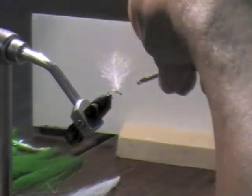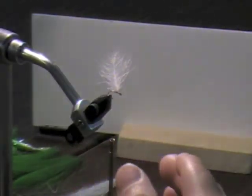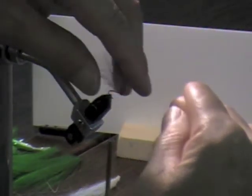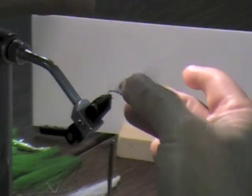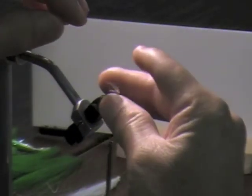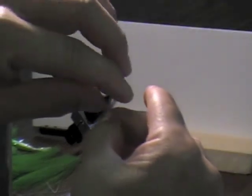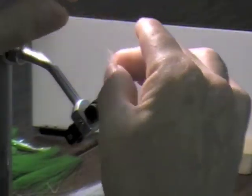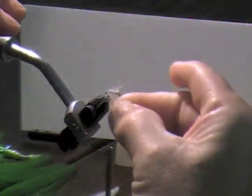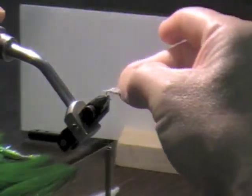And then what you want to do is you want to run your thread all the way to the back of the hook, right to where your thread ends. Then you want to take your feather and gather up all the fibers that you can. Doesn't matter if it's sticking out all over the place. Just grab that and wrap it back all the way to the back of the hook. Just make a body out of it.